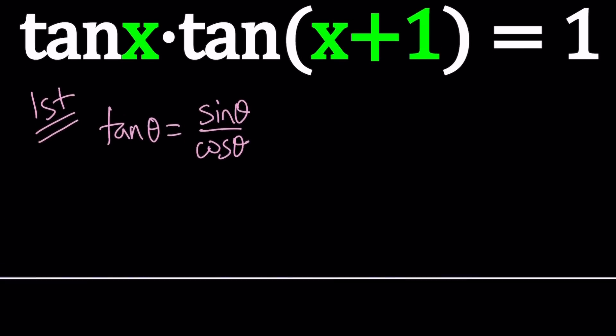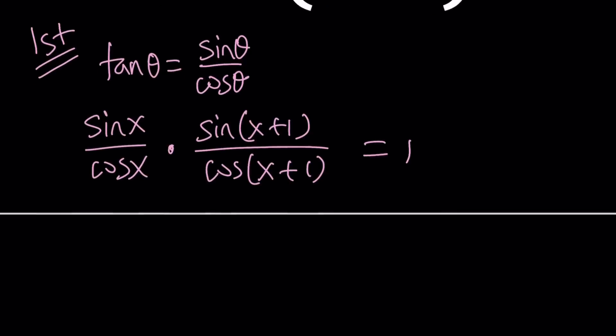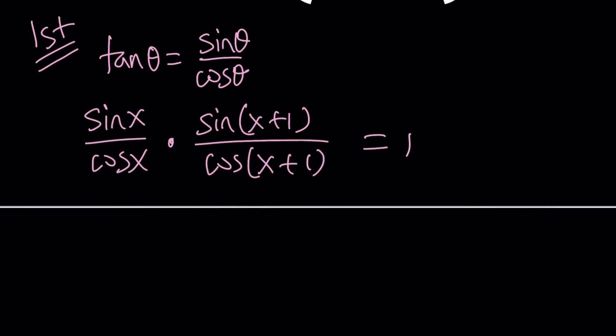So, if you replace tangent x with sine x over cosine x and then tangent x plus 1 with sine of x plus 1 over cosine of x plus 1 and the product is equal to 1. Notice that we're going to multiply the numerators and the denominators and then it's going to equal 1. So, the numerator at the end will equal the denominator.